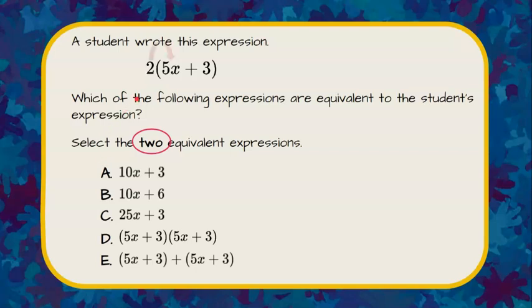Then I'm going to go back up to my original question and look at the expression given to me. I can see that this is a factor of two multiplied to what's in parentheses, a factor of 5x plus 3. So I'm going to distribute, I'm going to multiply 2 times 5x, which is 10x, and then 2 times positive 3, which is 6.